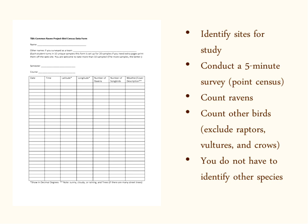Once you've identified your sites, you'll identify a time and then conduct a five-minute survey — it's called a point census. You'll need to time it with your device; most of you have mobile devices. You're going to count ravens and then count other birds. You do not have to identify the species of other birds that you see. You're not going to count very large birds such as raptors — that's hawks, vultures, or crows — and I'll give you more tips on that in later slides.